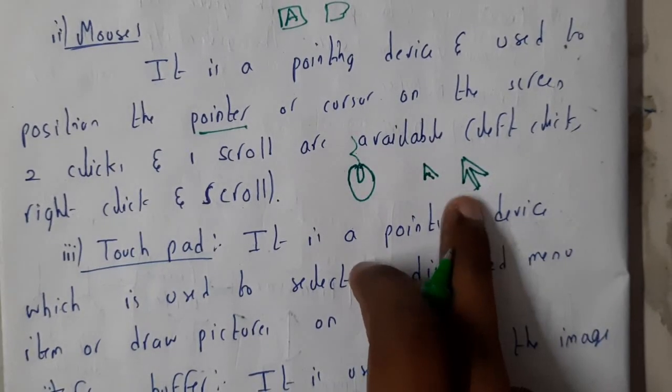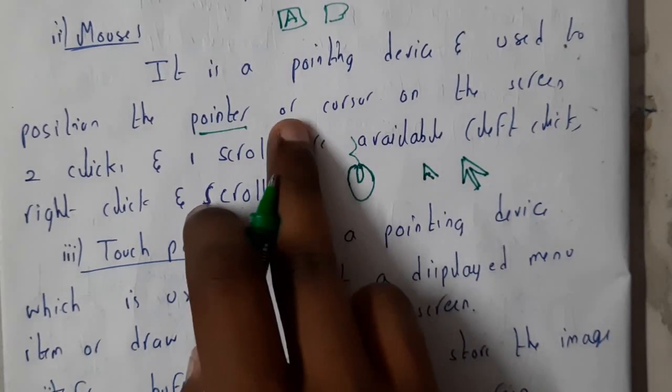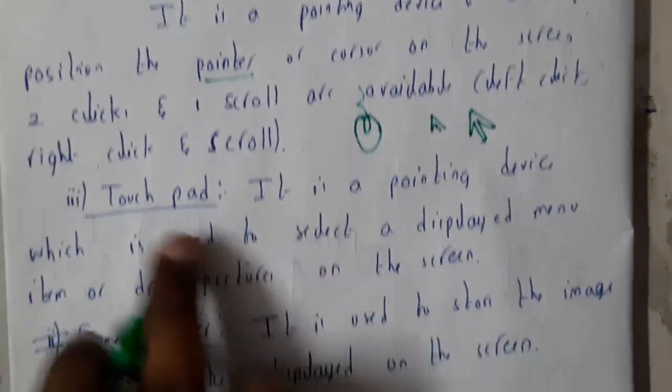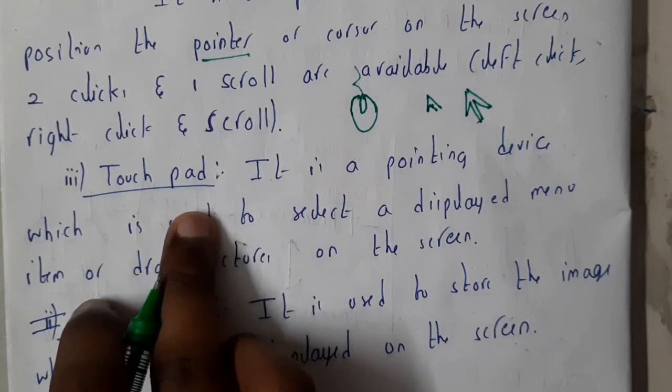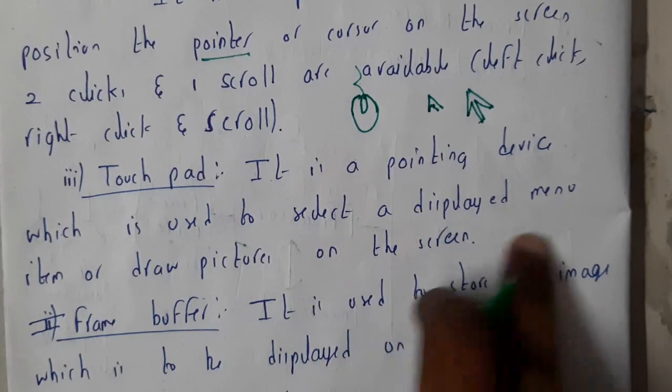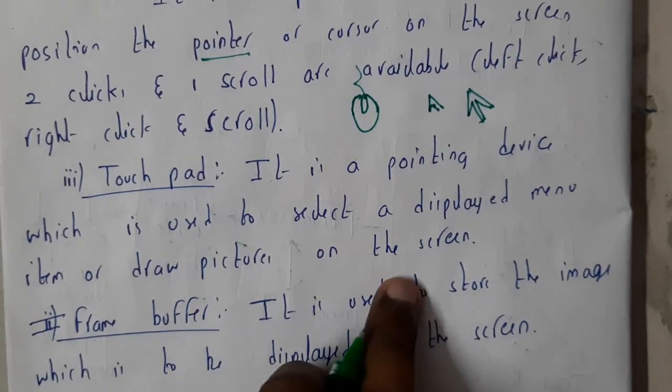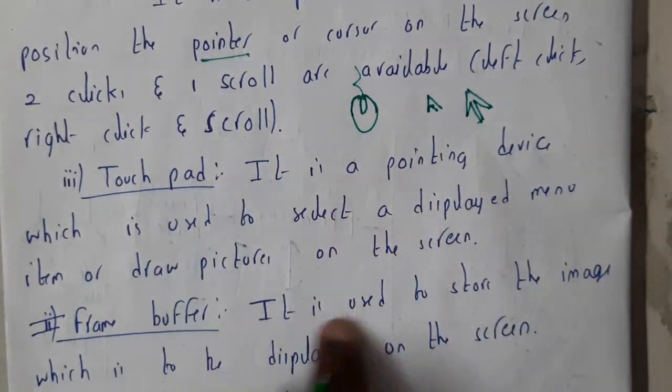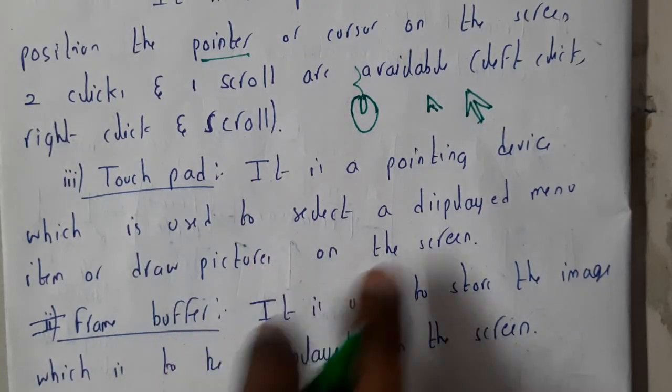This is your cursor, so for pointing this onto your icons or anything like that, you'll be using this mouse. And touchpad, touchpad is nothing but direct touch. It is a pointing device which is used to select or display the menu items or draw pictures. If you want to draw a circle, you'll be drawing in this way, so it's automatically drawn, something like a touch device.